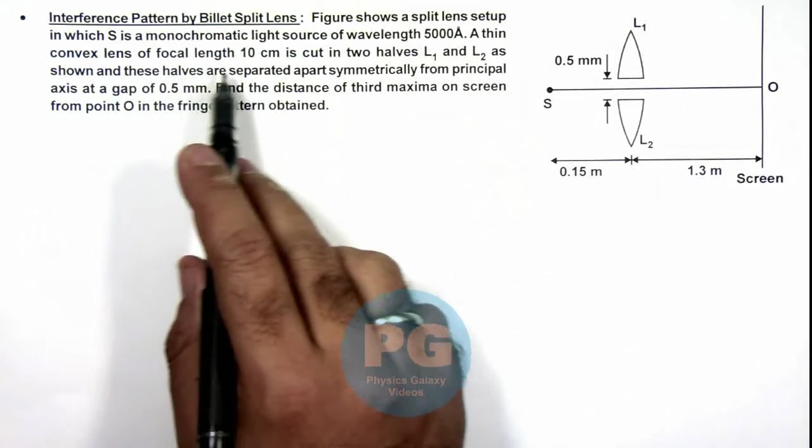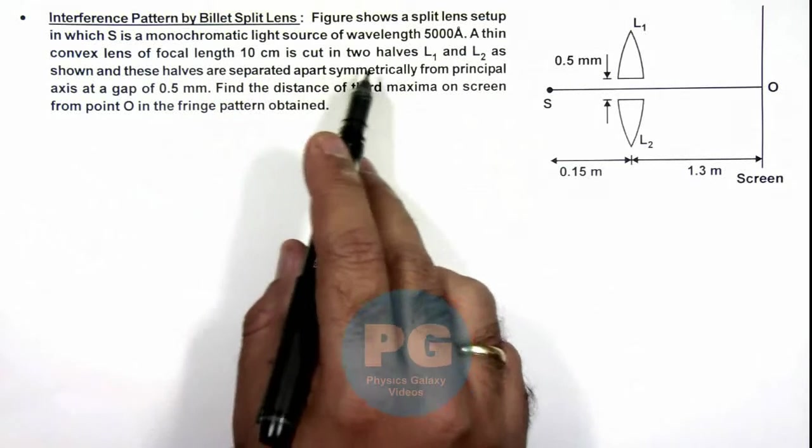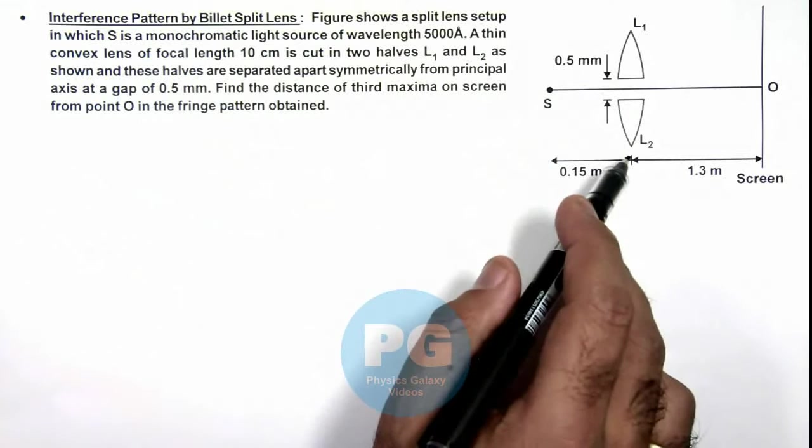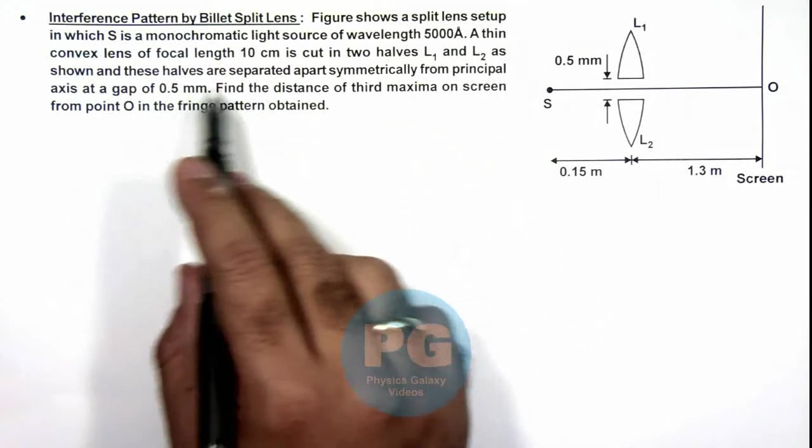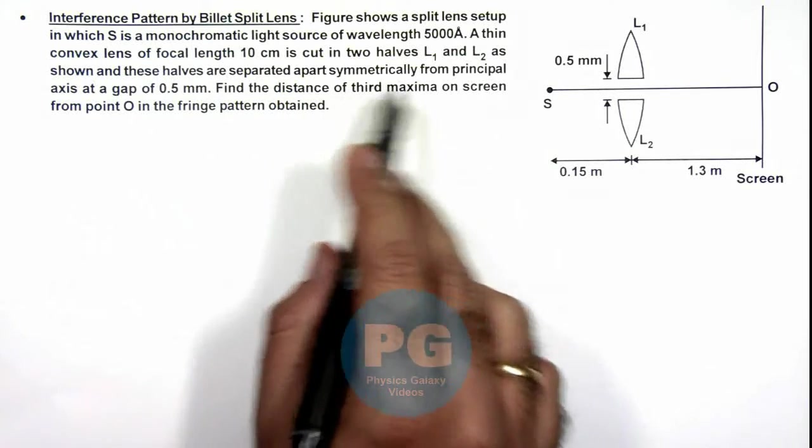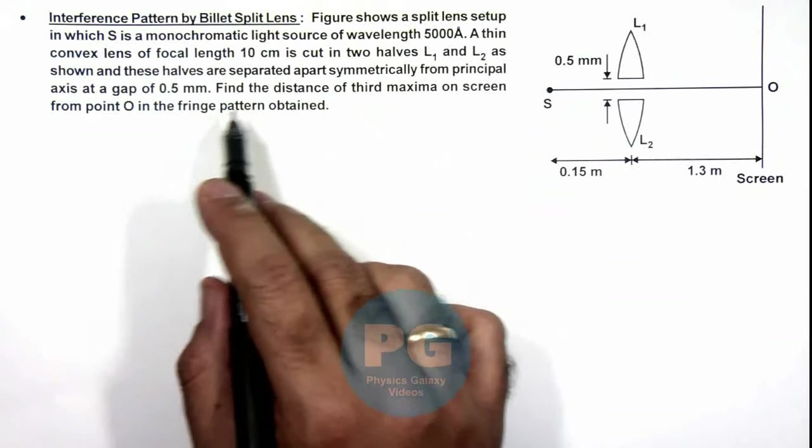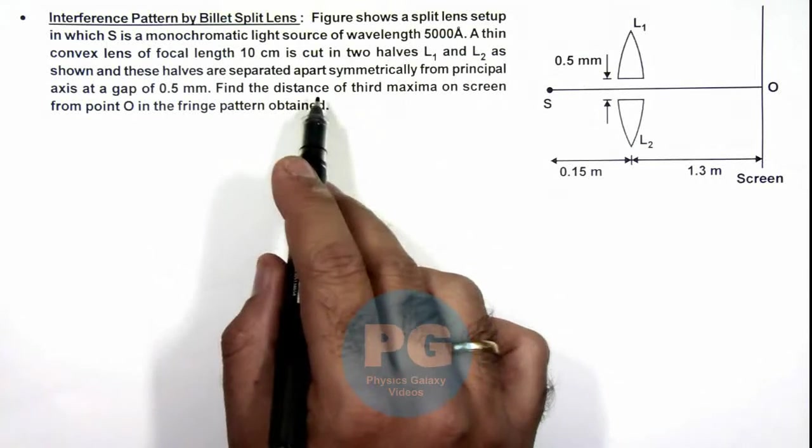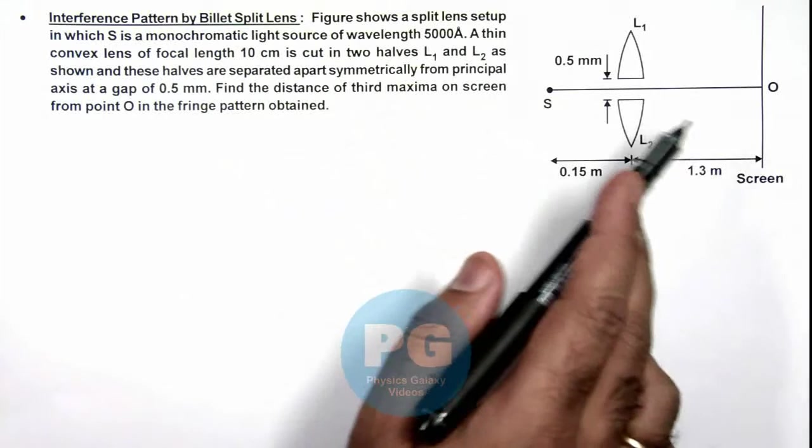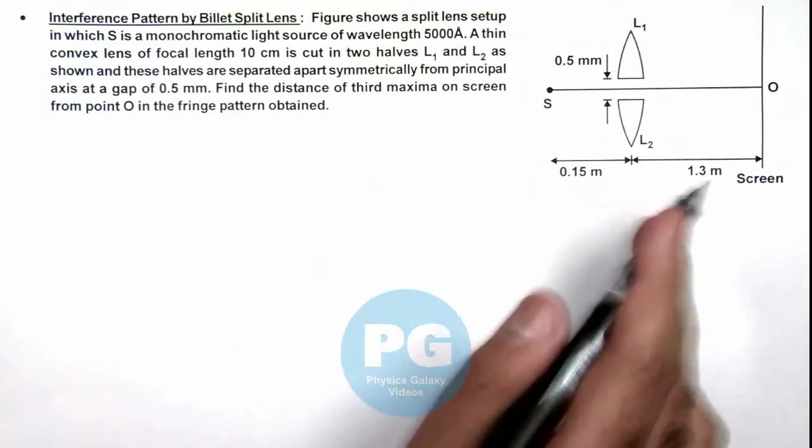A thin convex lens of focal length 10 centimeter is cut in two halves L1 and L2, as shown. These halves are separated apart symmetrically from principal axis at a gap of 0.5 mm. We are required to find the distance of third maxima on screen from point O in the fringe pattern obtained.